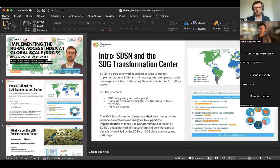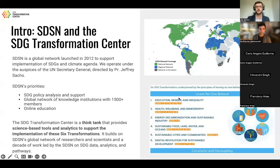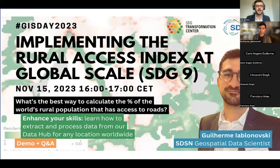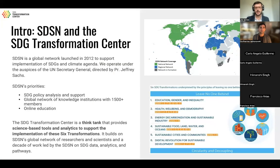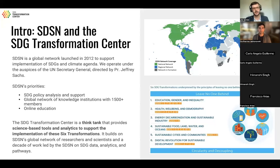I'll give a very brief introduction to SDSN and the SDG Transformation Center — just two slides — since I know you're mostly interested in looking at the data and how to extract it from our data repository. By way of background, SDSN is a global network launched in 2012 to support the implementation of the SDGs. We operate under a mandate from the UN Secretary-General and are directed by Jeffrey Sachs, an economist based in New York City. We have offices in New York, Paris, and Kuala Lumpur, Malaysia.